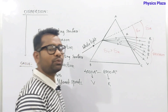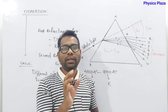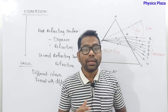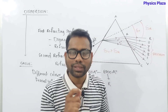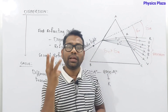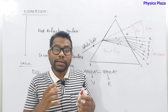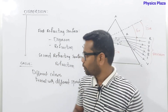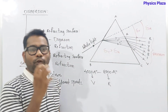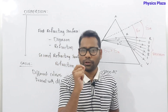Let us recap today's discussion. When monochromatic light passes through a prism, refraction occurs and there is an angle of deviation — the angle through which the incident ray deviates from its original path — which depends on four factors: angle of incidence, angle of the prism, refractive index, and color/wavelength. When white light passes through a prism, dispersion occurs, producing a spectrum.